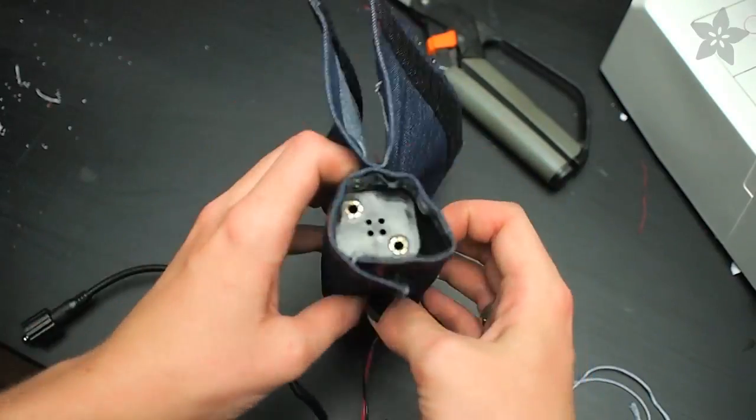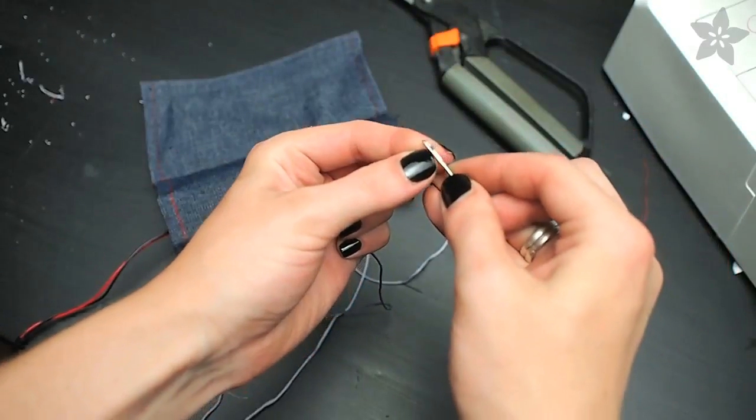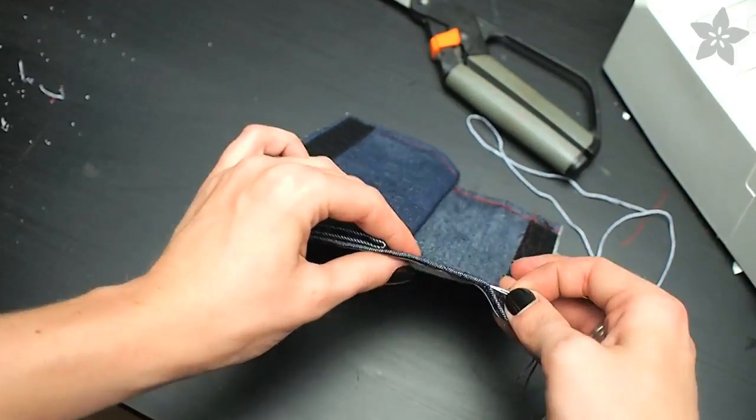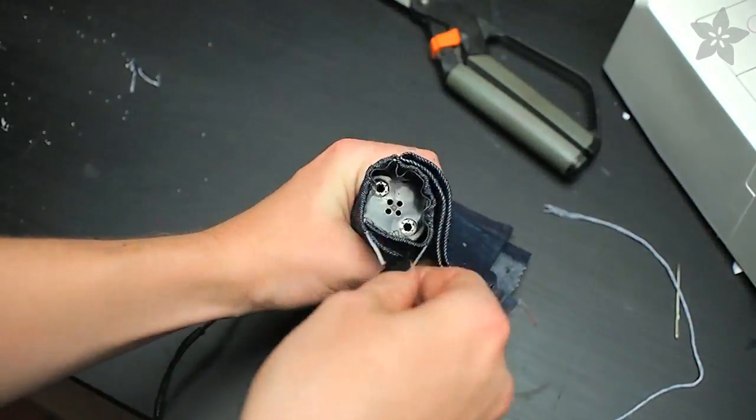The battery holder needs something to cinch the ends shut so I used some embroidery floss which I threaded in a needle and then sewed through the hem of the flap of the battery holder side of this whole thing. And then I can use that as a drawstring to cinch the ends shut.